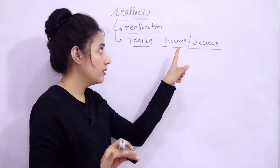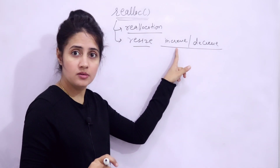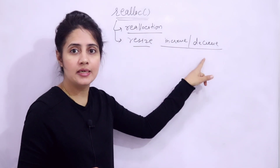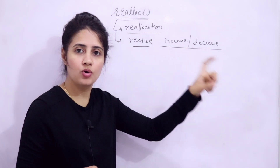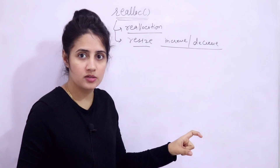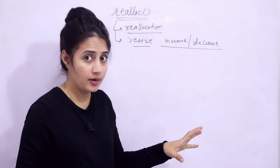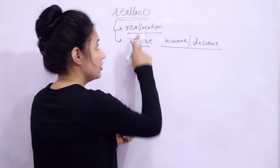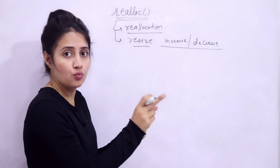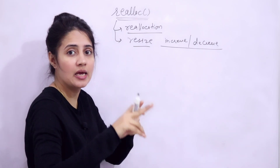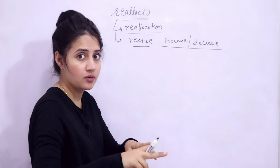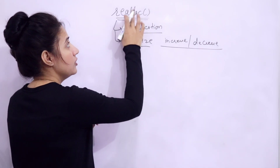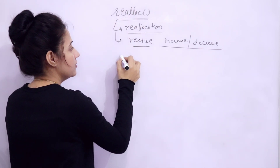You can increase the memory block size or decrease the allocated memory block size. This is a built-in function which is declared in stdlib.h. Now, how to use this function? What is the syntax? You just write realloc — it accepts two arguments.